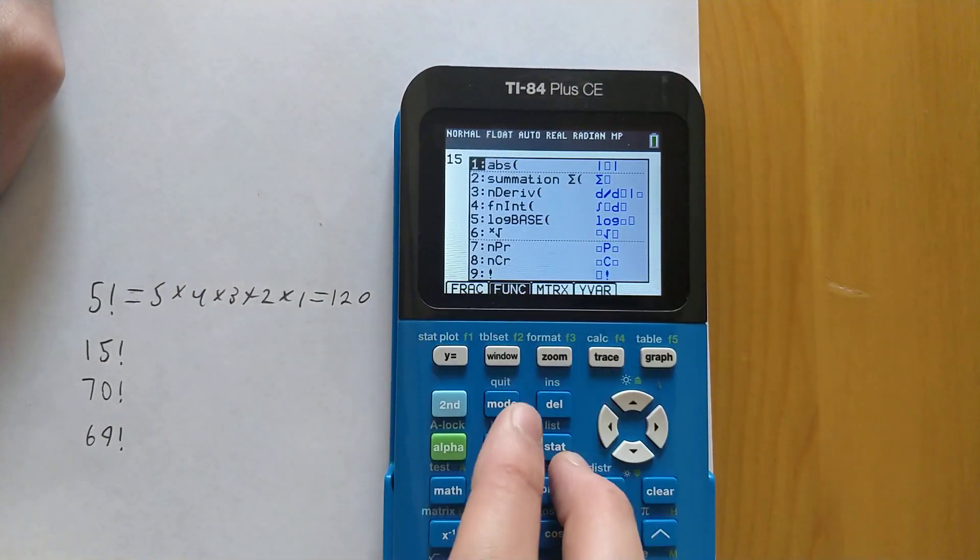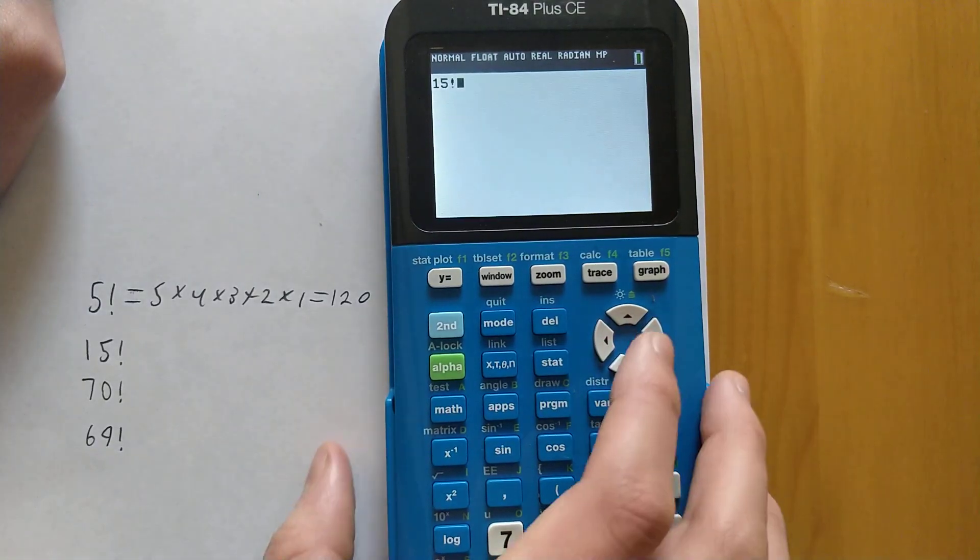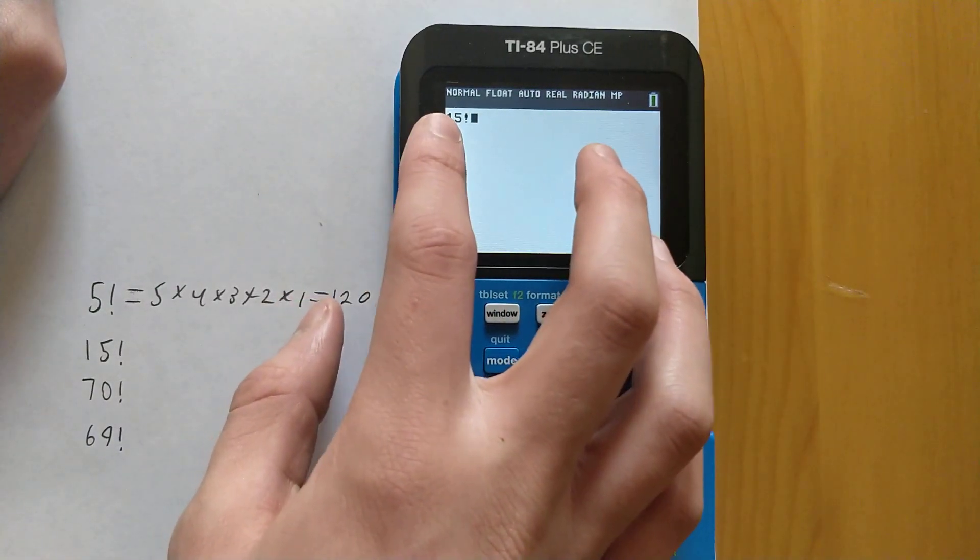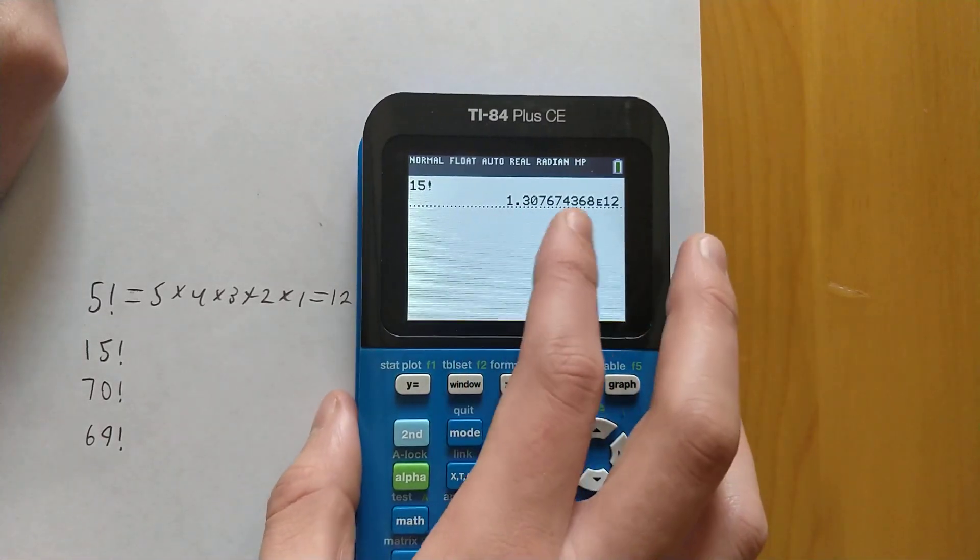And then the last option here, which is 9, is the factorial. So we can just press 9 to get there. And we now have 15 factorial. Just hit enter. So 15 factorial is this massive number.